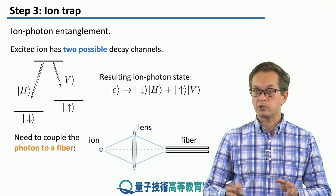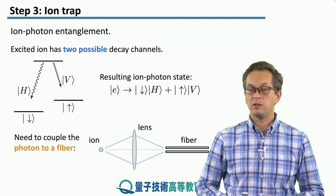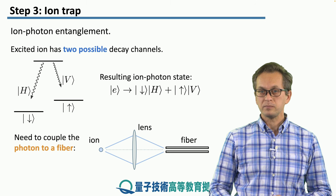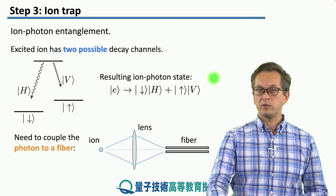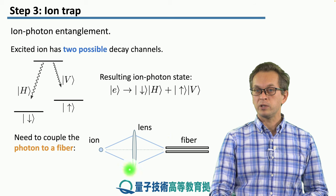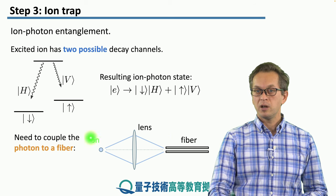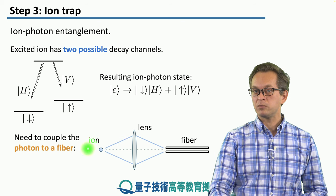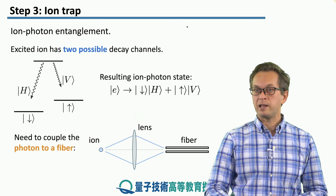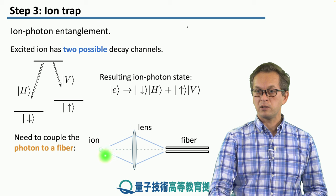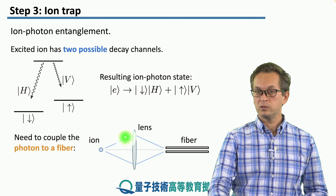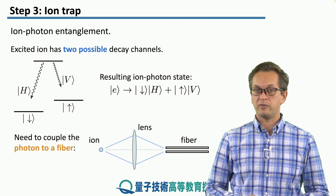We have to ensure that we can actually capture this photon into fiber. Typically, what's done is we use a lens in order to increase the numerical aperture (NA). Ions like to emit light in all possible directions, so we have to use a lens in order to catch the light emitted within a cone and direct it back into the fiber.